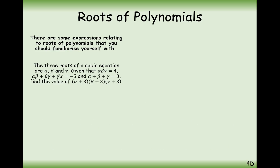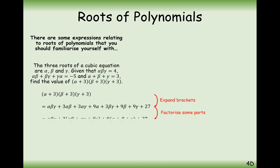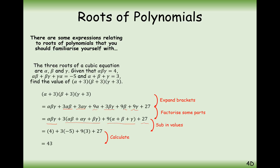So, the three roots of a cubic equation are alpha, beta and gamma. Alpha beta gamma equals four, sum of the doubles equals minus five, sum of the singles equals three. Find the value of alpha plus three times beta plus three times gamma plus three. The easiest way is to expand the brackets and simplify: we've got alpha beta gamma, plus three times the sum of the doubles, plus nine times the sum of the singles, plus 27 at the end. Substituting the values gives a final answer of 43.